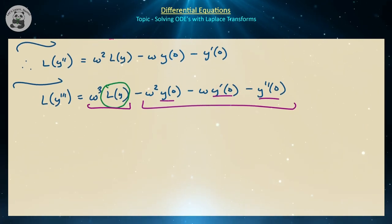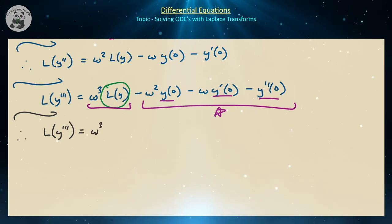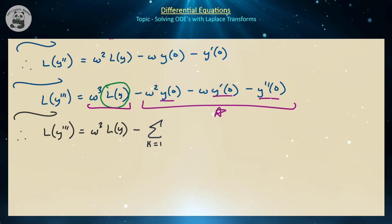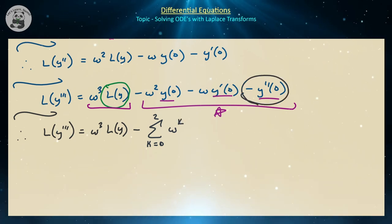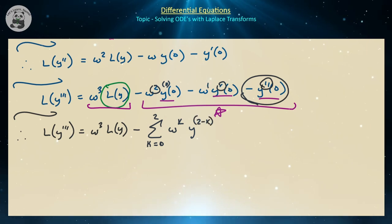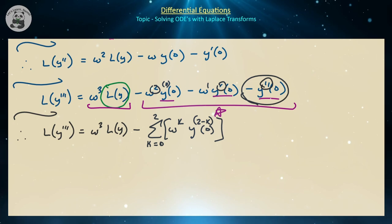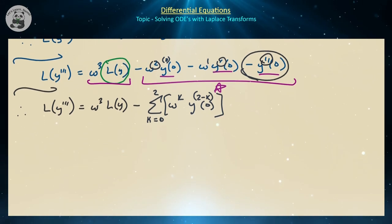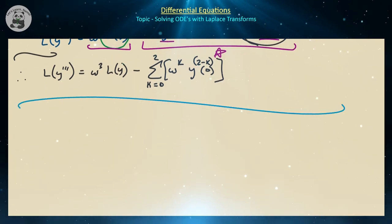Focusing on the third derivative, we can write this compactly as omega cubed times L{y} minus the sum from k equals 0 to 2 of omega to the k times the (2 minus k)th derivative of y evaluated at 0. The powers go in reverse — omega to the 0 paired with the second derivative, omega to the 1 with the first, omega to the 2 with the zeroth. This compact form generalizes naturally.